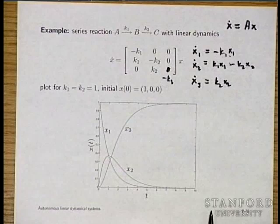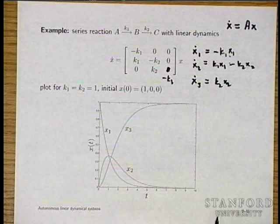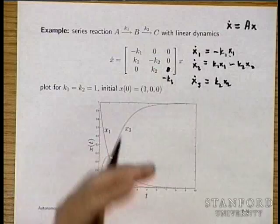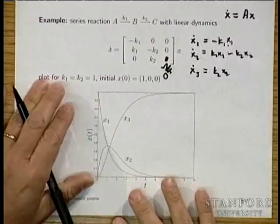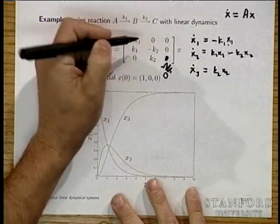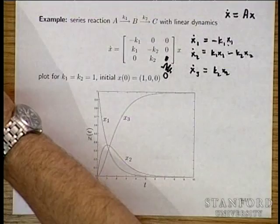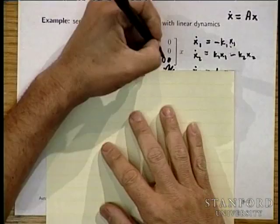If we put minus K3 in the bottom-right entry, that would mean x3 decays — it goes somewhere we don't account for, like the environment. There are a couple of interesting things about this matrix. The column sums are zero, and that has a meaning. Let's work out what it means that the column sums are zero.